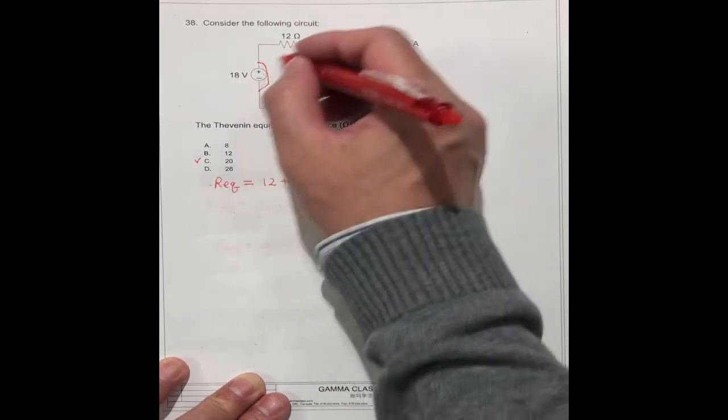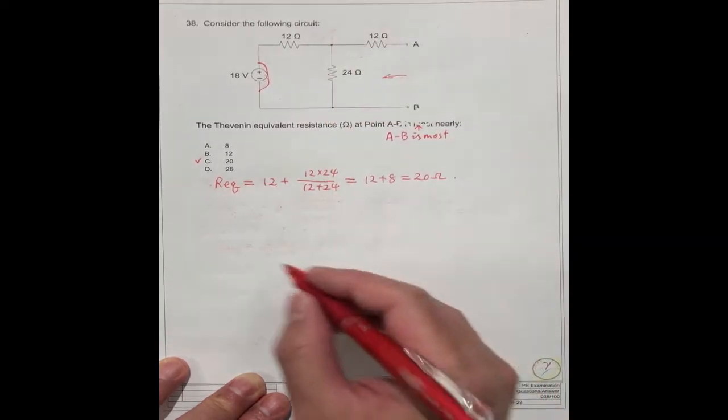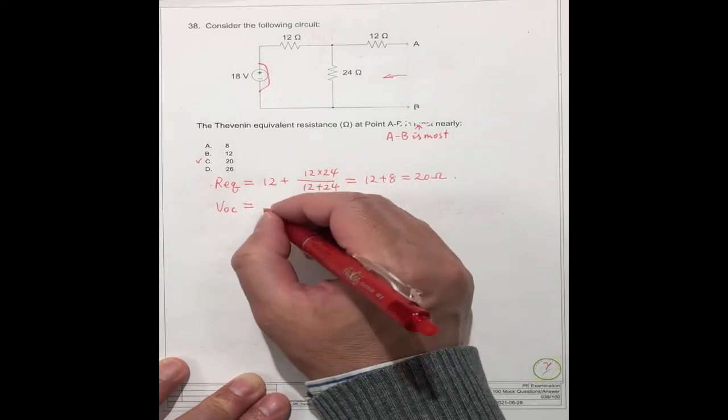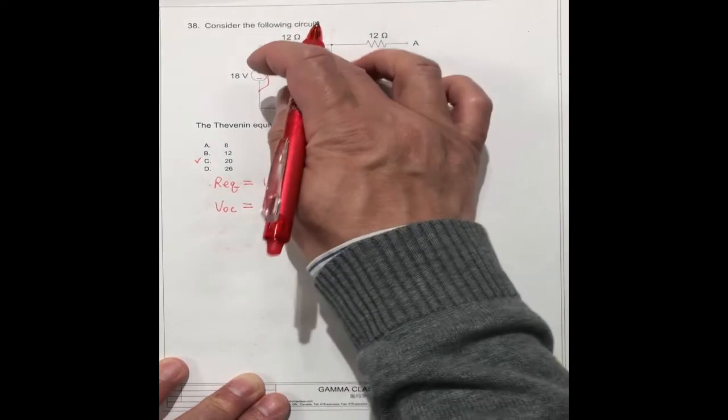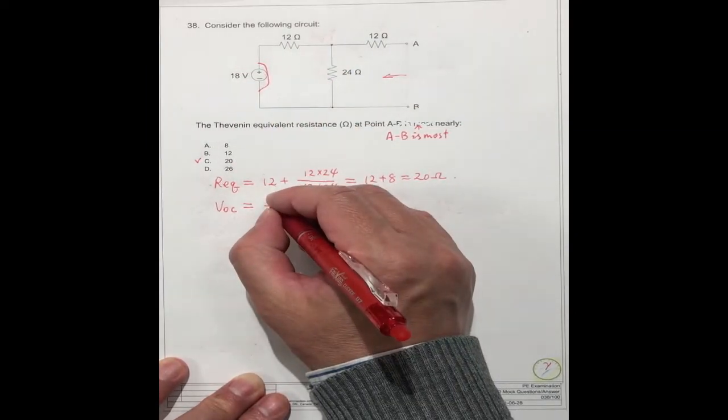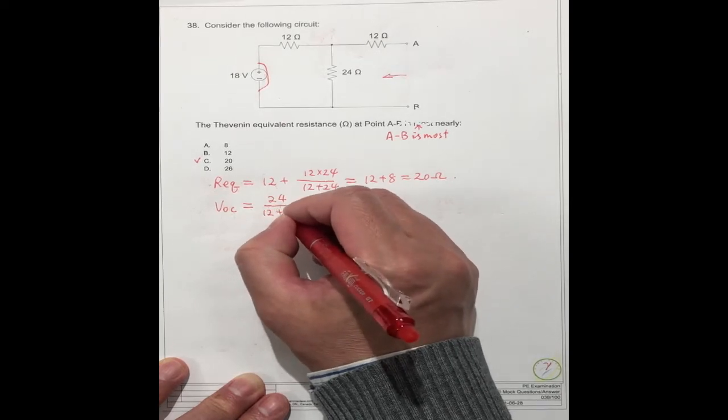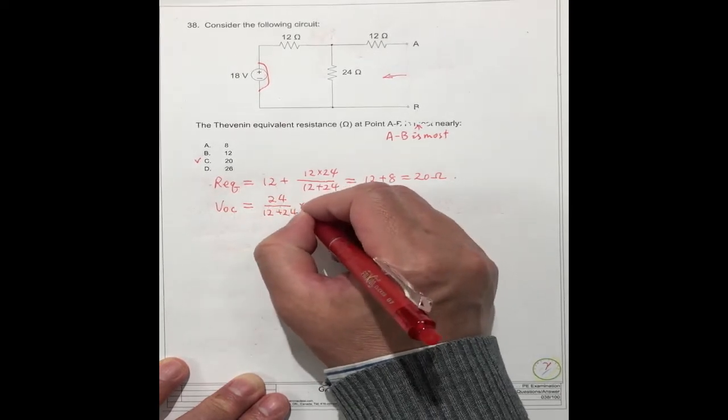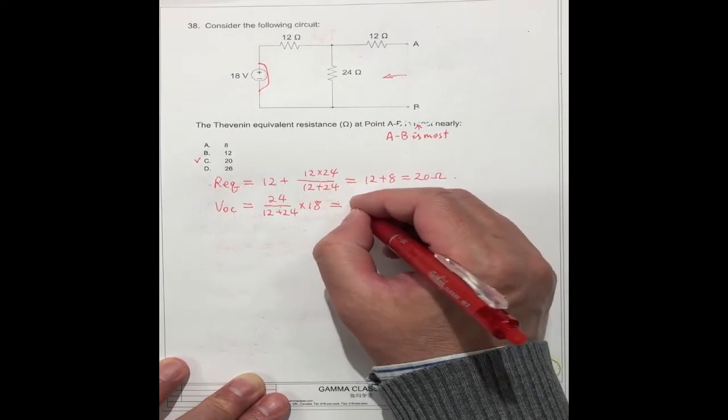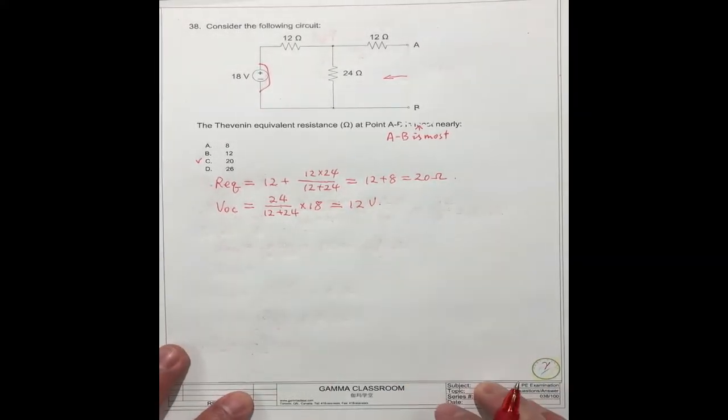In this circuit, we can find what is the value for the voltage at this point. V_OC is equal to, these are two resistors, 12 ohm and 24 ohm. This is 24 ohm divided by 12 plus 24, times the voltage 18. This is equal to 12 volts.